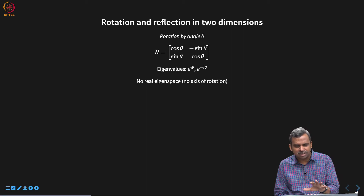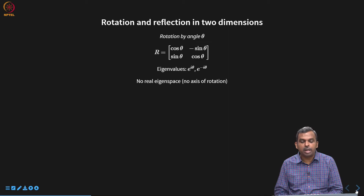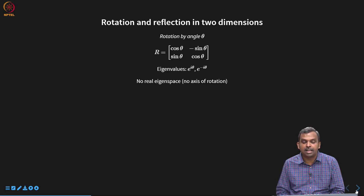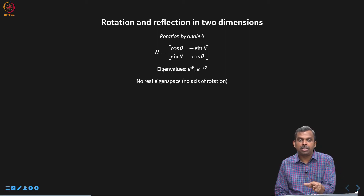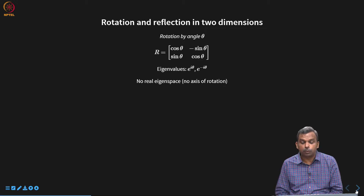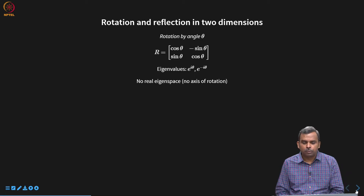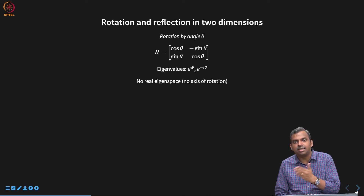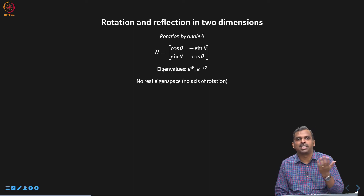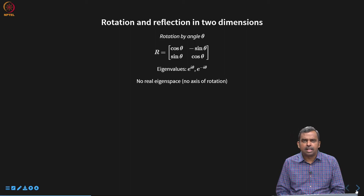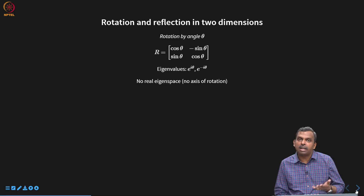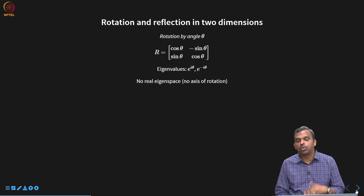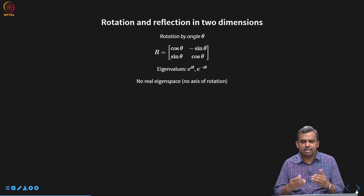Taking inspiration from two dimensions, a very popular operator that preserves the norm is rotation by an angle theta: the matrix cos θ, −sin θ; sin θ, cos θ. Operating on a vector xy gives that vector rotated by theta. Interestingly, this operator has no real eigenspace unless theta is 0, since it rotates every line through the origin. But if you go to complex space, eigenvalues and eigenvectors do exist.